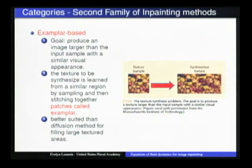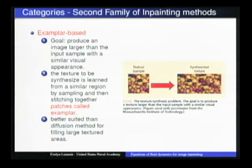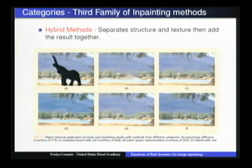The second category is exemplar-based inpainting. The goal is to produce an image larger than the sample image. The texture is synthesized from a similar region and stitched together as patches — those patches are called exemplars. This is better suited than diffusion methods for filling large textured areas. However, it is not well-suited for preserving edges.